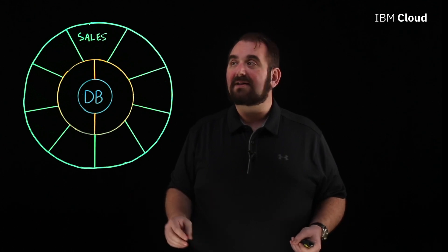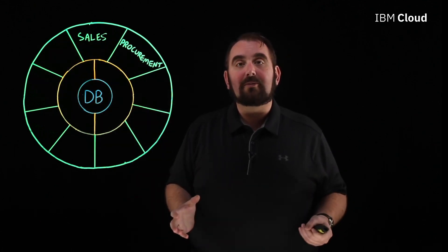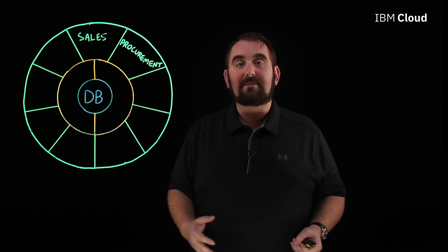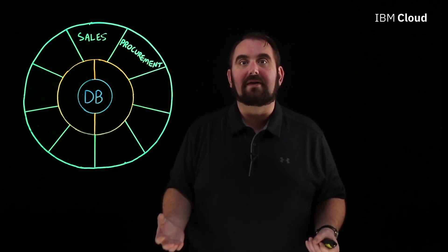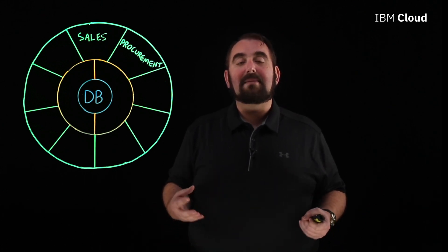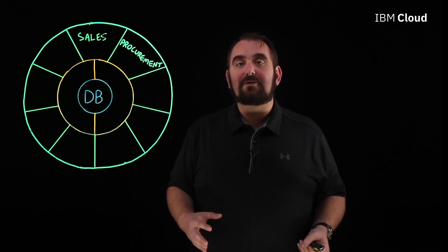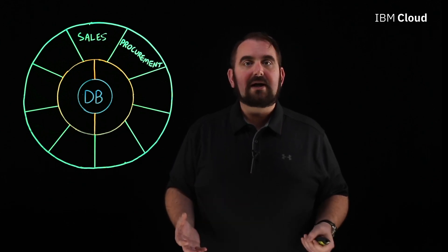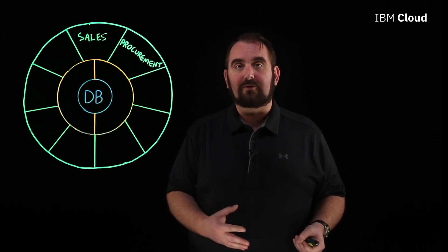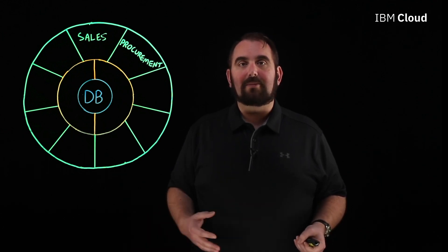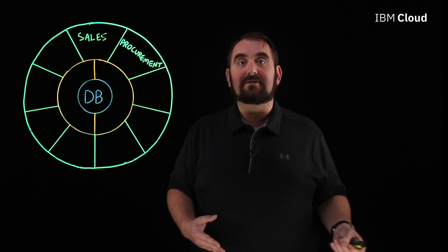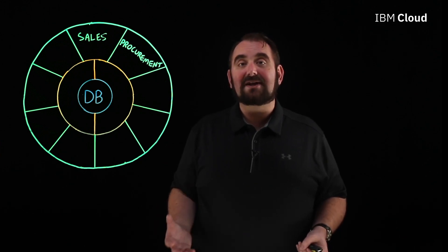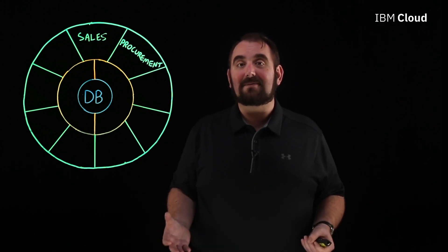In order to make sales happen, you've got to have product, and in order to have product, you've got to have procurement. For procurement, you've got to track what materials you're buying, who you're buying them from, where they're coming from, and whether you're getting the best deal to acquire what you need to make your product. But procurement goes so much further than that — it's not just what it takes to make your product. It's also whether you're procuring what you need for your employees to keep up and running, from things as complex as servers for a data farm to as simple as packages of ballpoint pens.